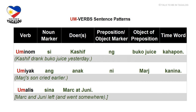Here are some common sentence patterns you may use with UM verbs: verb, noun marker, doer or subject, preposition or object marker, object of the preposition, and the time word or rest of the sentence. For example: uminom si Kashif ng buko juice kahapon. Since the time word is kahapon, meaning yesterday, you know right away the sentence is in the past tense, so the verb is in the past aspect: uminom.